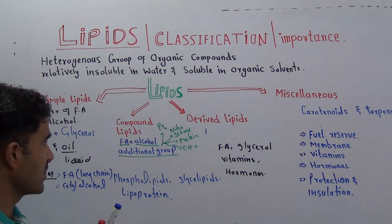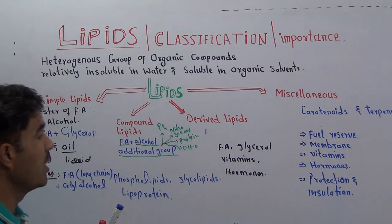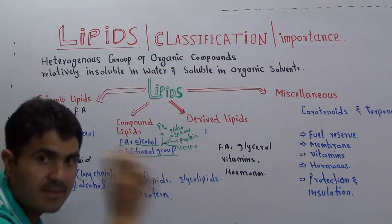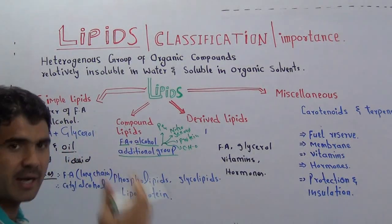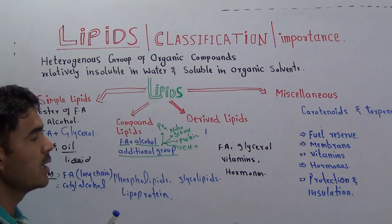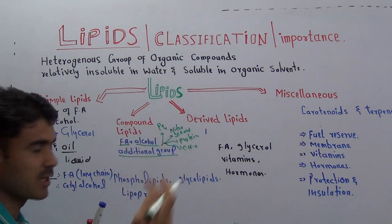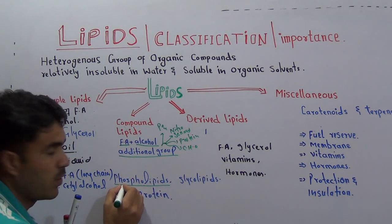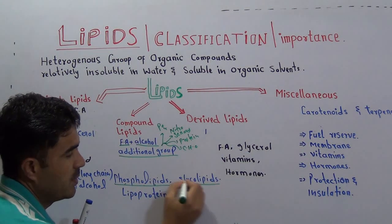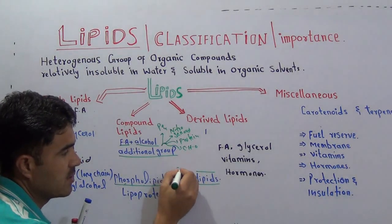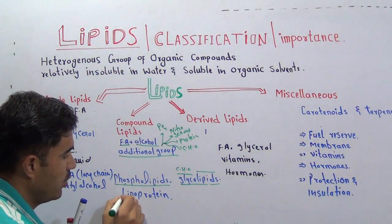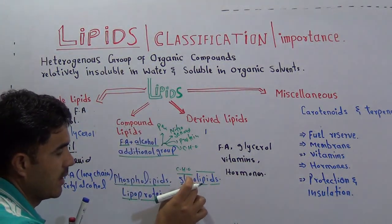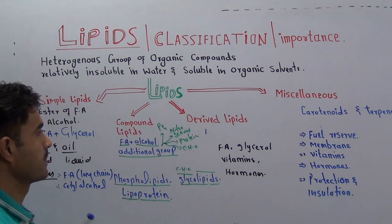We have very good examples of compound lipids. Number one is phospholipids — you can see the prefix 'phospho' combined with lipids. Then we have glycolipids — 'glyco' means carbohydrate, so this is carbohydrate combined with lipid. And we have lipoproteins — lipid combined with protein. So carbohydrate with lipid is a compound lipid, and lipid with protein is also a compound lipid.